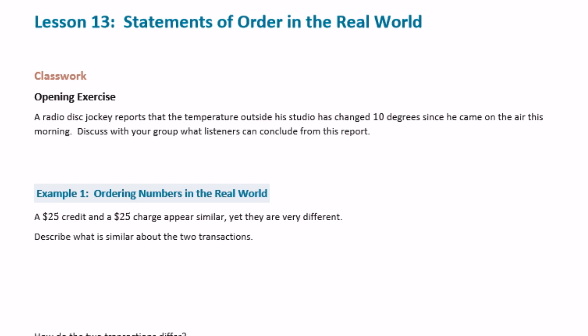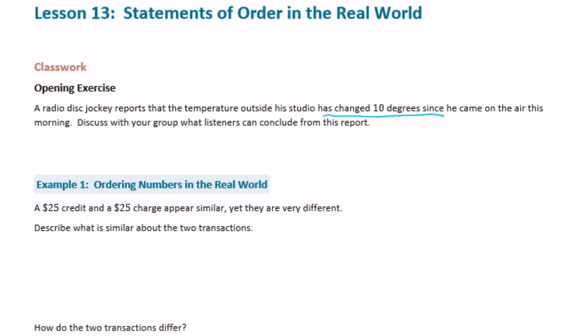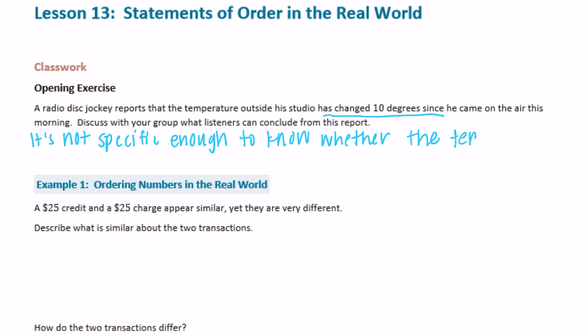Discuss with your group what listeners can conclude from this report. So his studio has changed 10 degrees. If we're talking about temperature and he just said it changed 10 degrees, we're not sure if it increased by 10 degrees or fell by 10 degrees. So it's kind of inconclusive — it's not specific enough to know whether the temperature went up 10 degrees or down 10 degrees.